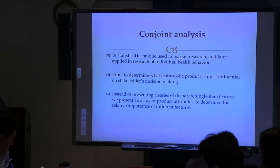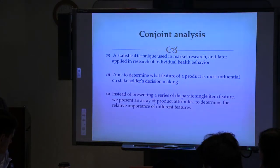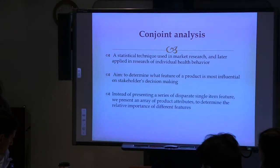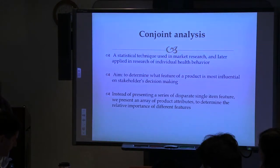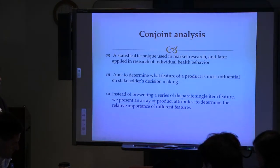To address the first question — modeling hospital gatekeepers' decision-making — I use a method called conjoint analysis. Conjoint analysis is a method used mostly in market research and later applied to individual health behavior research. For example, Dr. J. Lee used conjoint analysis to model the general population's preference for HIV first seed. I borrowed this method to study stakeholders' decision-making.